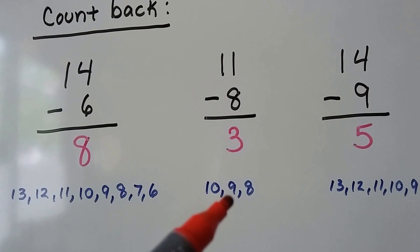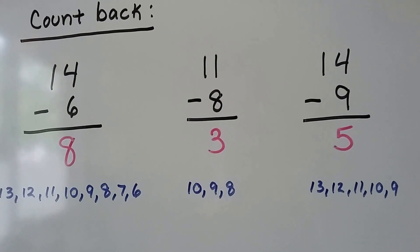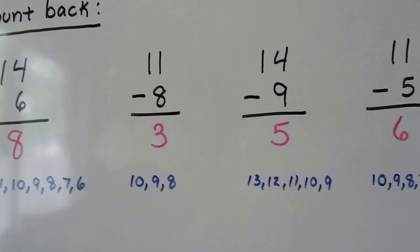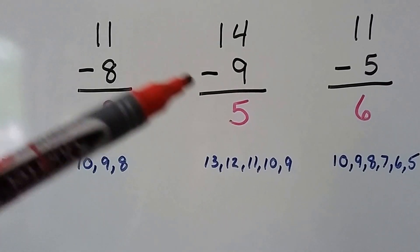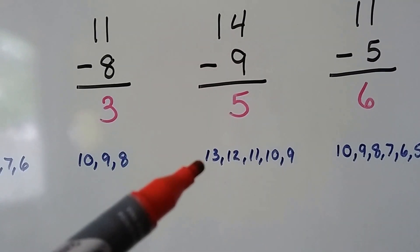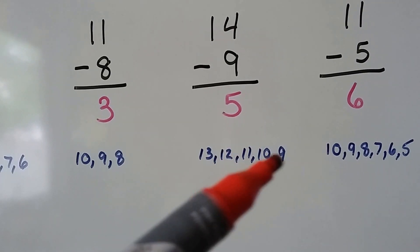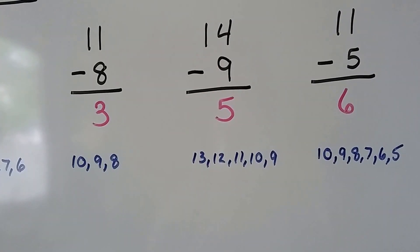14 minus 9, we start at the 14 and count back to the 9: 13, 12, 11, 10, 9. That was five numbers. 14 minus 9 is 5.